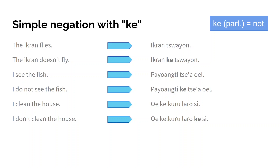The same happens for the other sentences. 'I see the fish' is 'oel teylu tìng nari' — 'I don't see the fish' becomes 'oel teylu ke tìng nari.' And 'oe kelkutral tìng nari si' meaning 'I clean the house' becomes 'oe kelkutral tìng nari ke si.' You might be wondering why it is 'ke si' instead of 'ke laro si.'